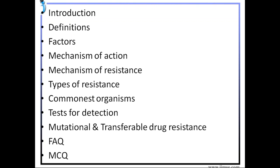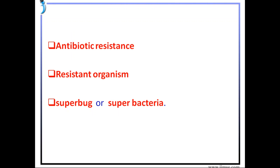Before going to the slides, we must be well acquainted with the key terms: antibiotic resistance, resistant organisms, and superbug or superbacteria. Antibiotic resistance is a drug resistance where a microorganism is able to survive exposure to an antibiotic at normal dosage. A resistant organism is one that will not be inhibited or killed by an antibacterial agent at any concentration achievable in the body after normal dosage. Superbugs are bacteria that carry several resistant genes and are called multi-resistant bacteria or superbugs.